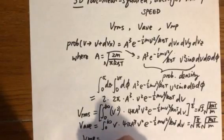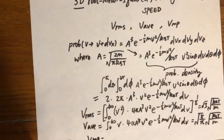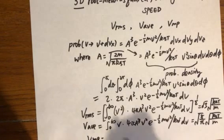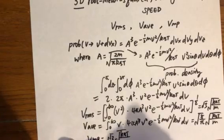Also in a different video, in the most probable speed video, I showed you that the most probable speed is square root of two times square root of kbT over m.